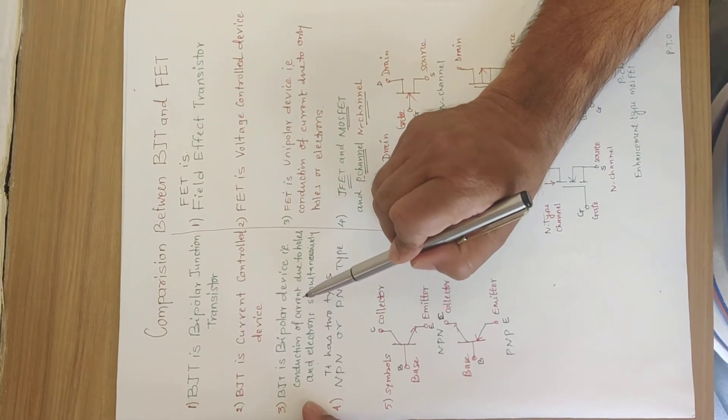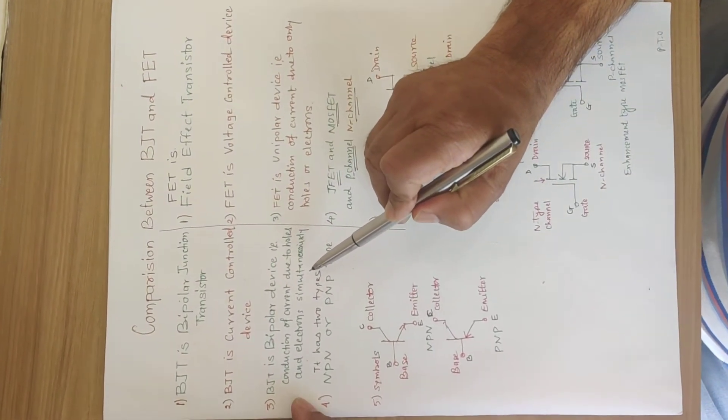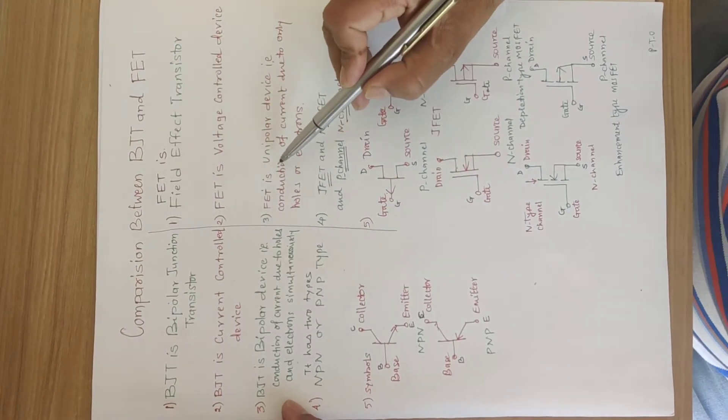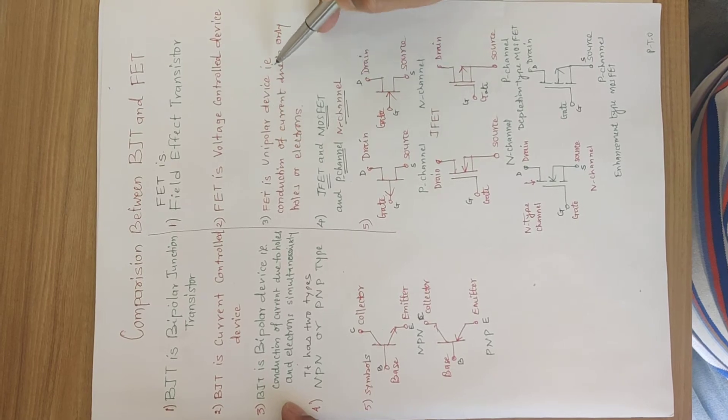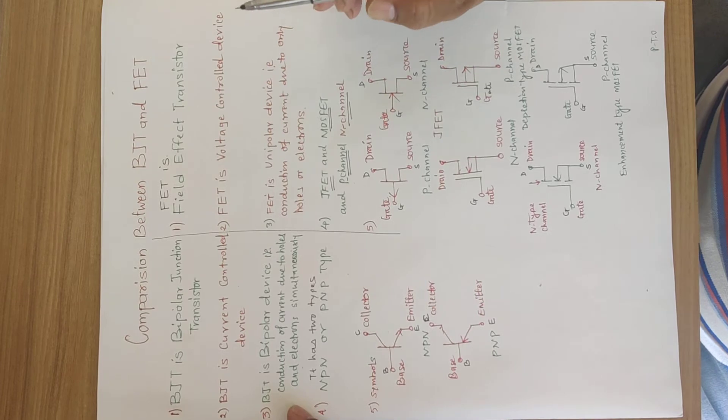BJT is bipolar device, that is the conduction of current is due to the holes and electrons simultaneously. In FET, it is a unipolar device, that is the conduction of current due to only holes or electrons.